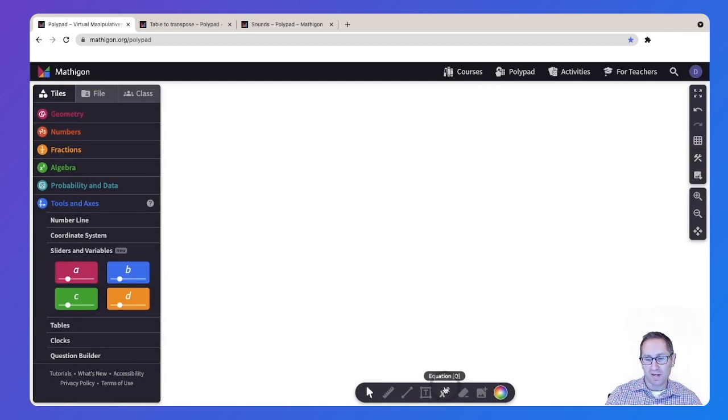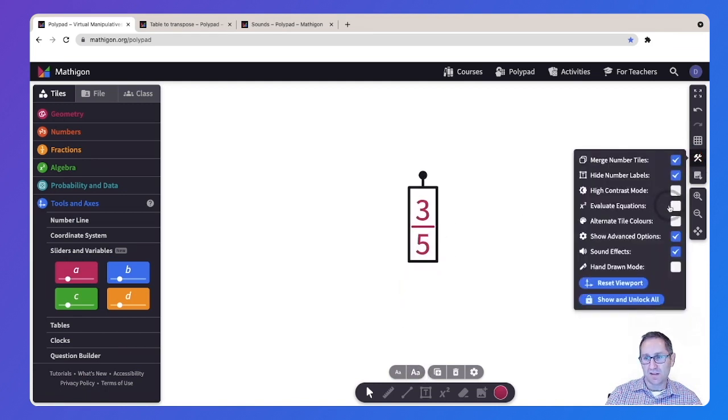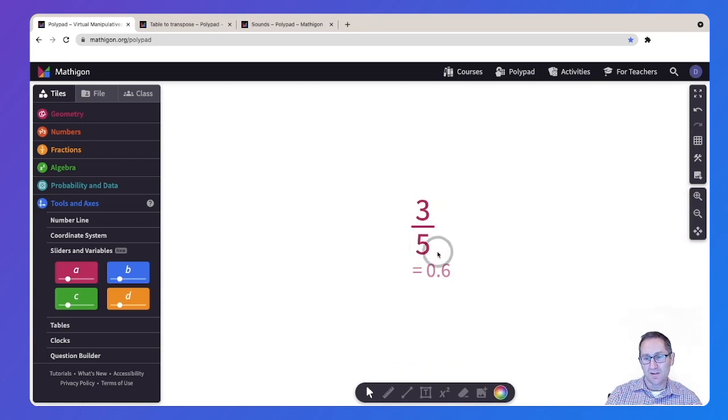So I'll keep it off for right now. I'm going to add a fraction to the canvas. Let's say three fifths. Make it nice and big here so we can see it. Three fifths. And now when I select evaluate equations, it'll tell me that that three fifths is equal to 0.6.